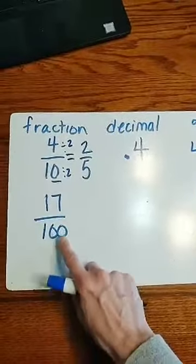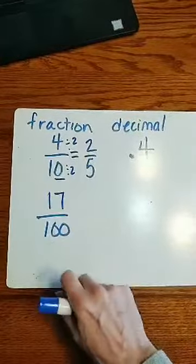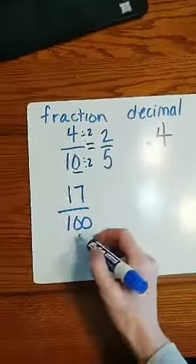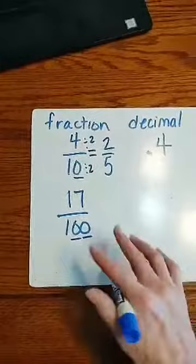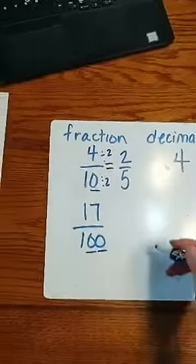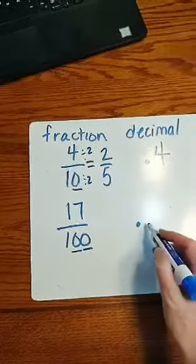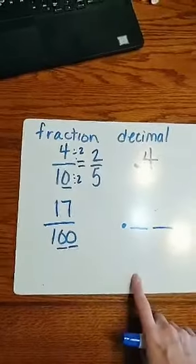Now to write this as a decimal, we said as long as it's over 10 or as long as it's over 100, we can. So I have two zeros. If we can't remember the hundredth place, I know those two zeros can tell me how many spots I'm going to have after my decimal.